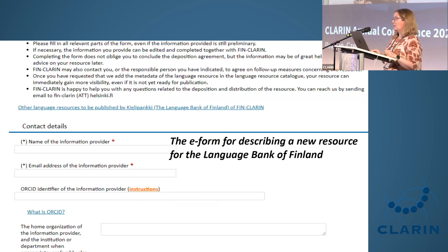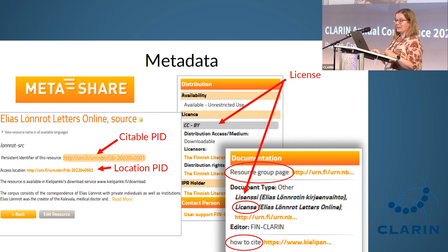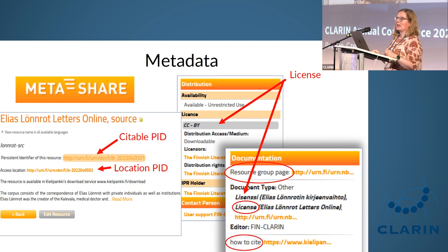They show a picture of the form users fill in when submitting initial metadata. They currently use a system called META-SHARE for metadata but may move to ELG or another system. They create a citable PID and a location PID, and use a corpus short name as an identifier for file names — for example, the short name 'lönnrot' for a particular resource group. After license negotiations are finalized, license information is filled in and a citation link is given as soon as possible so the resource depositor can already refer to the corpus before it's published.